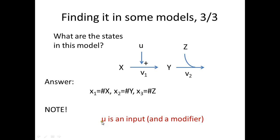Note that U is an input to the system because it only appears as a modifier — it's not affected by the system, it only enters and affects it. And that's it about states.